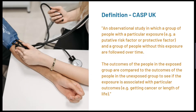A cohort study as defined by CASP UK is an observational study in which a group of people with a particular exposure and a group of people without this exposure are followed over time. The outcomes of the people in the exposed group are compared to the outcomes of the people in the unexposed group to see if the exposure is associated with particular outcomes, for example getting cancer or length of life.